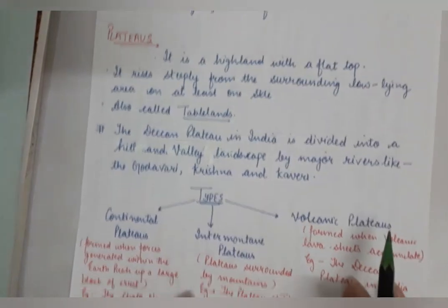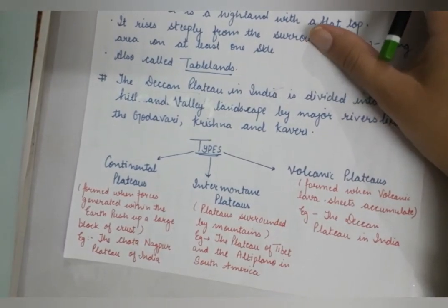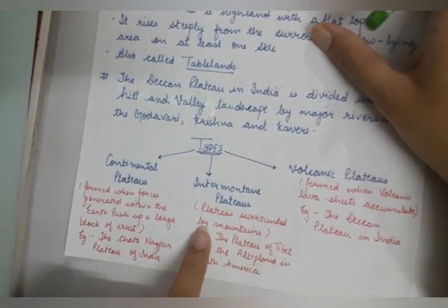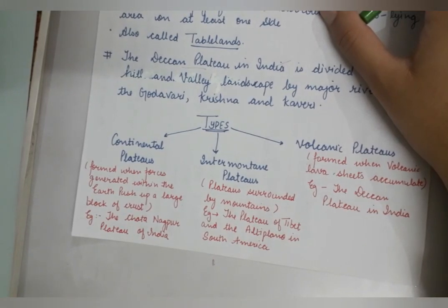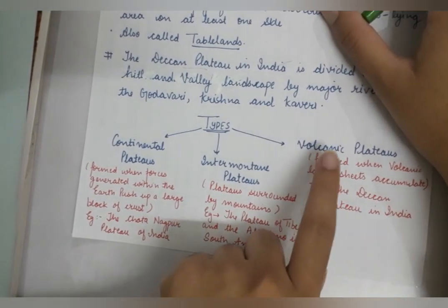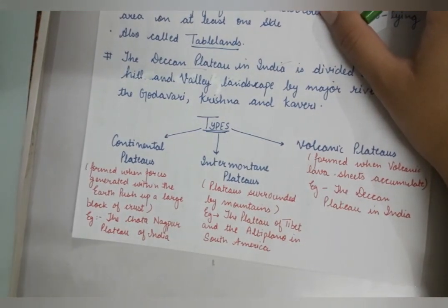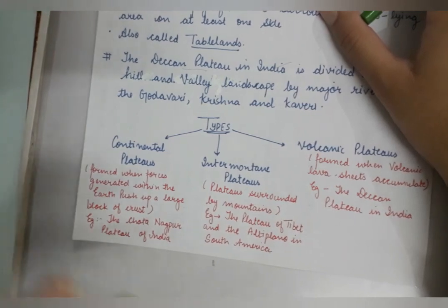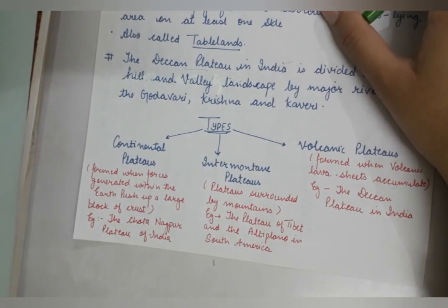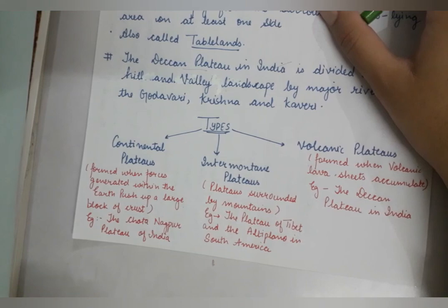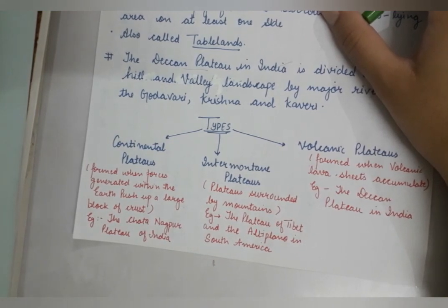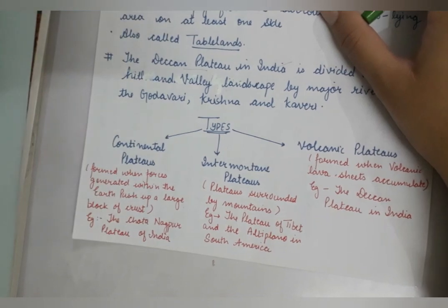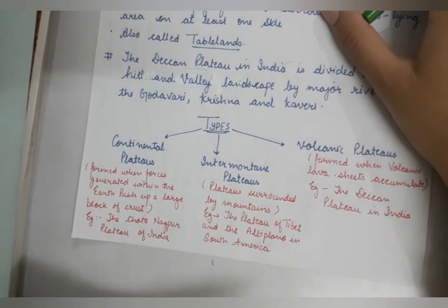There are three types of plateaus: continental plateaus, inter-mountain plateaus, and volcanic plateaus. Volcanic, as the name tells us, is formed due to volcanic action — sheets of lava accumulate turn by turn after repeated volcanic eruptions, forming a volcanic plateau. The Deccan Plateau in India is a type of volcanic plateau.